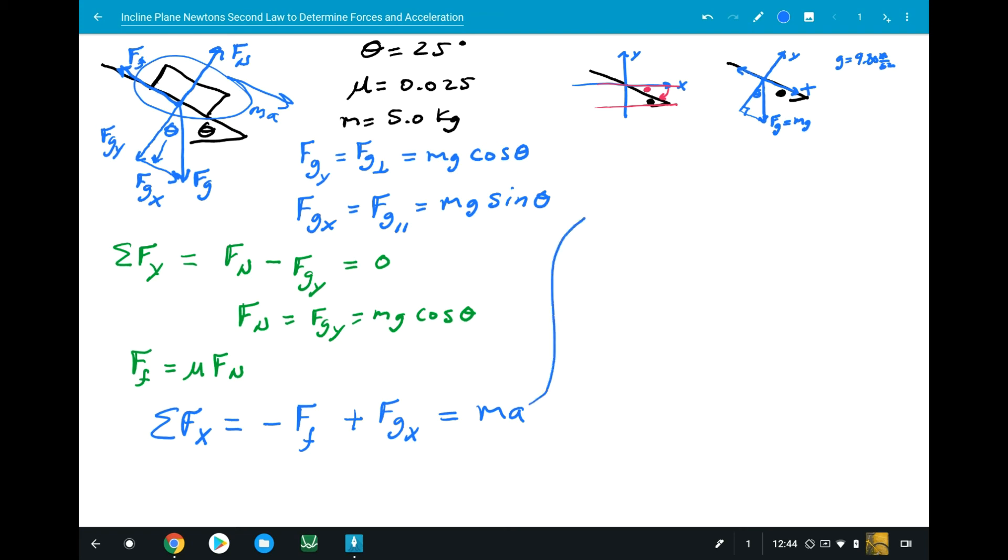We can use this property. So A now equals minus the force of friction plus FGx over M. Let's put our components in. So minus mu times FN, which is Mg cosine theta, plus FGx, Mg sine theta, over M.